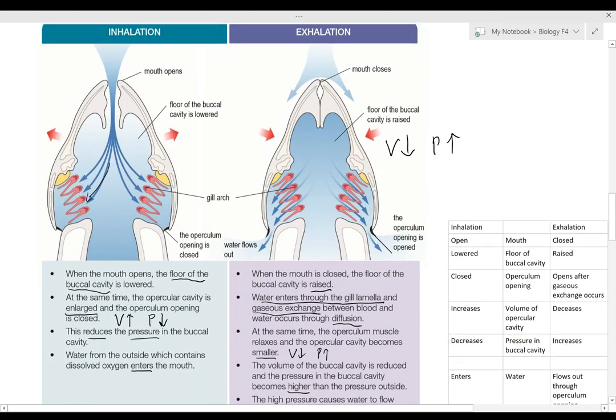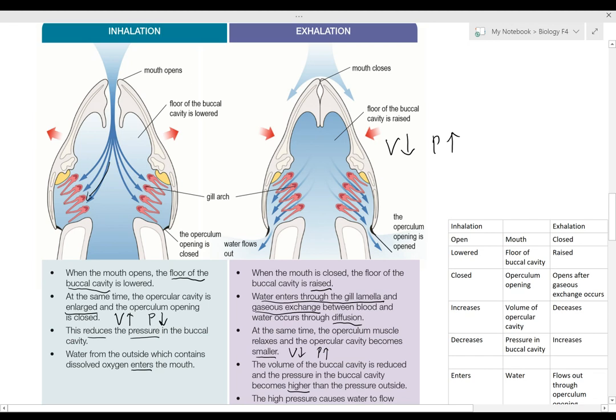First of all, the mouth is open during the inhalation process. The floor of the buccal cavity is lowered. The buccal cavity, like the buccal pharyngeal cavity for the frog, is something like the jaw. So when the floor of the buccal cavity is lowered, it actually will increase the space inside here.